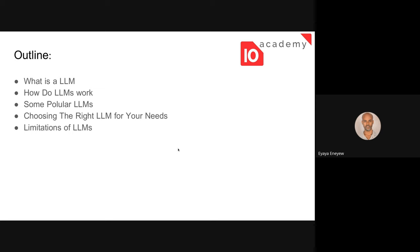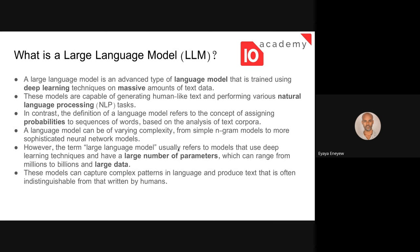We'll be discussing what a large language model is and how these models work. We will also see some popular LLMs, how we can choose the right LLM for our needs, and finally some of the limitations of LLMs. A large language model is an advanced type of language model trained using deep learning techniques on a large amount of text data.